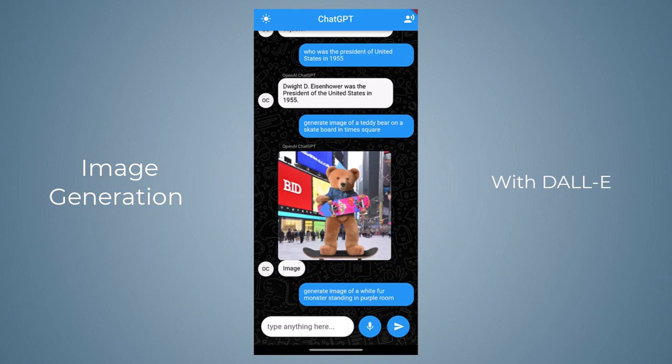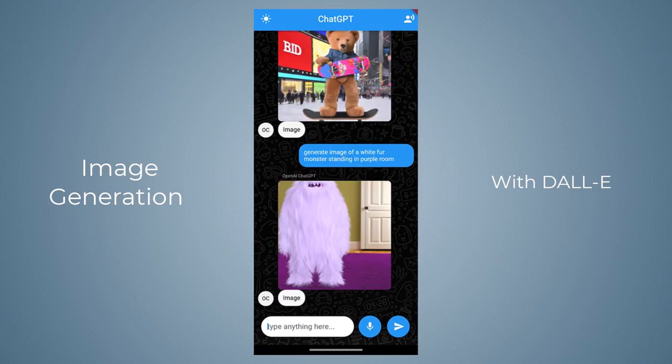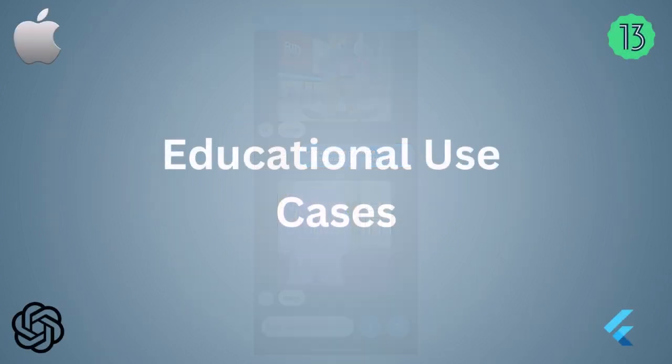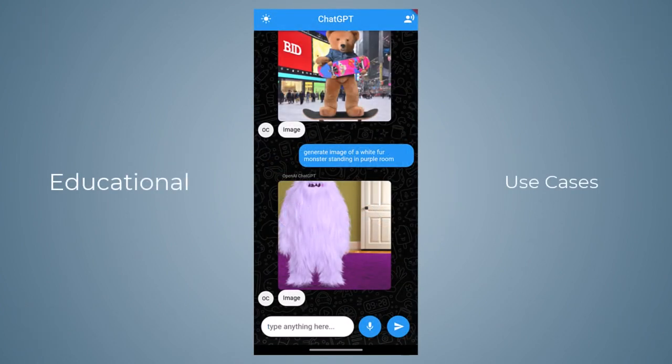Similarly, let's generate another image by saying 'Generate image of a white fur monster standing in a purple room,' and there you can see we got this image. Similarly, you can generate any type of image by providing the details in the form of simple text.